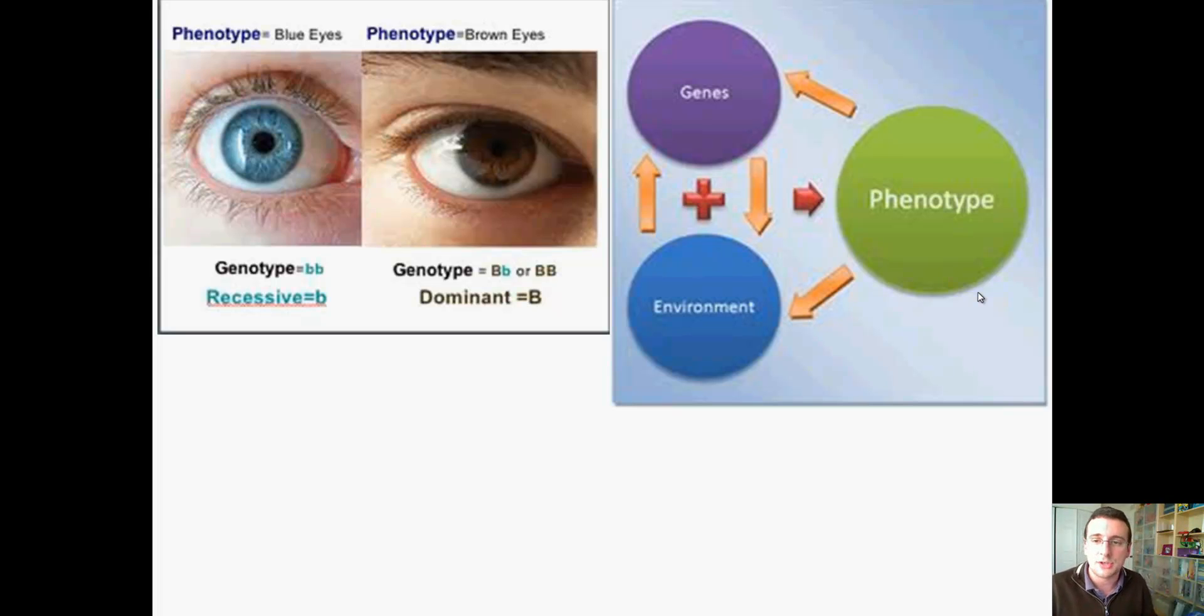So, it's not as simple as genetics equals look. Some things, some traits are determined by a combination of the environment and the genes. Now, in the next video, we're going to be talking about how this code gets formed and how it actually works.